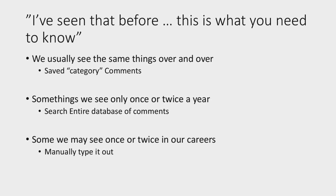We kind of tier the type of stuff we see by levels. There's a lot of stuff we see over and over — in electrical I always comment on the inside of the panel and GFIs. That's the idea behind saved category comments in the comment editor. Then some things we only see once or twice a year — we know they're in our saved comments, but since we don't use them every day, they may not be right in front of us. And then some things we only see once or twice in our career — in those cases it might be easier just to type it out.